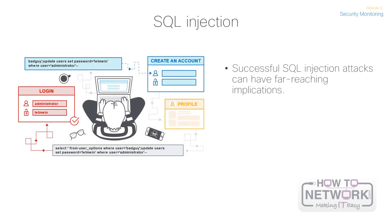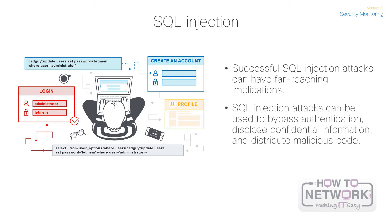Successful SQL injection attacks can have far-reaching implications. This actually occurred back in 2012 when a hacking group collected the email credentials for 450,000 users using an SQL injection attack against an unnamed Yahoo subdomain. SQL injection attacks can be used to bypass authentication, disclose confidential information, and distribute malicious code. This makes SQL servers a high-value target for threat actors.